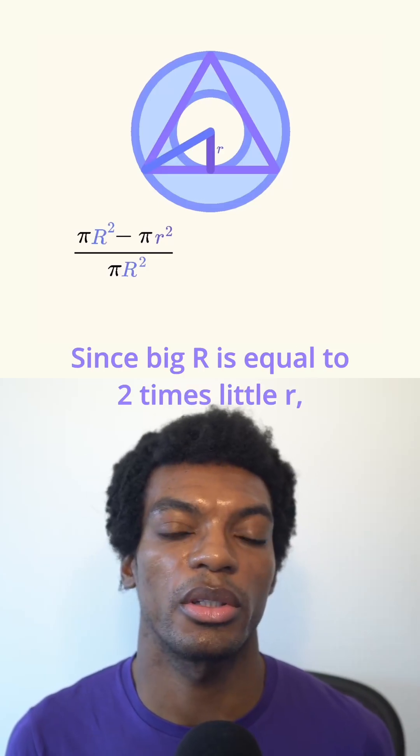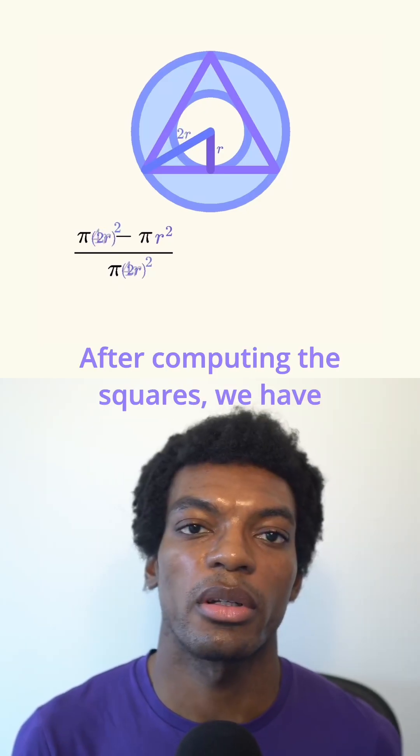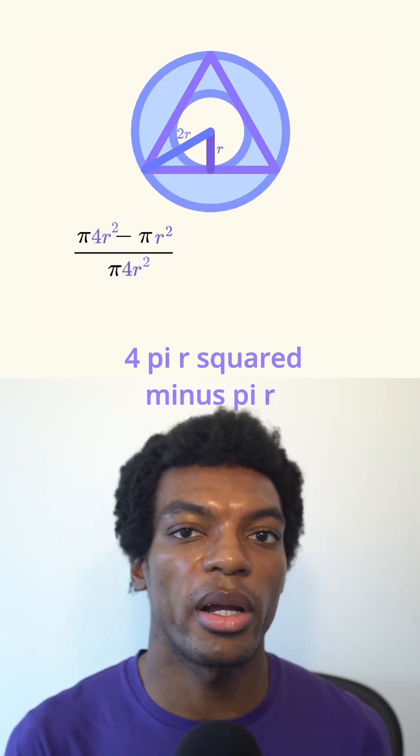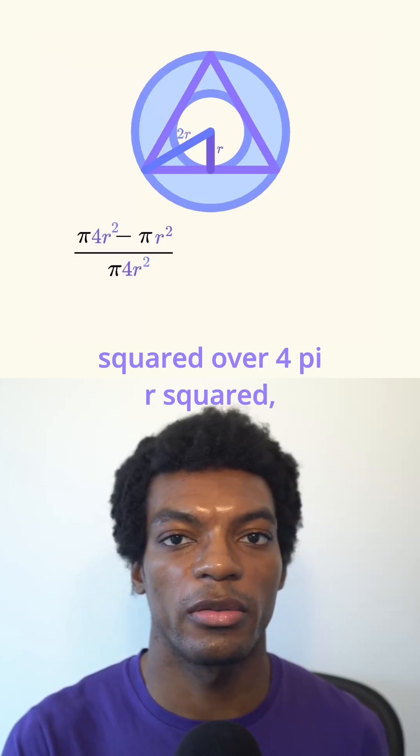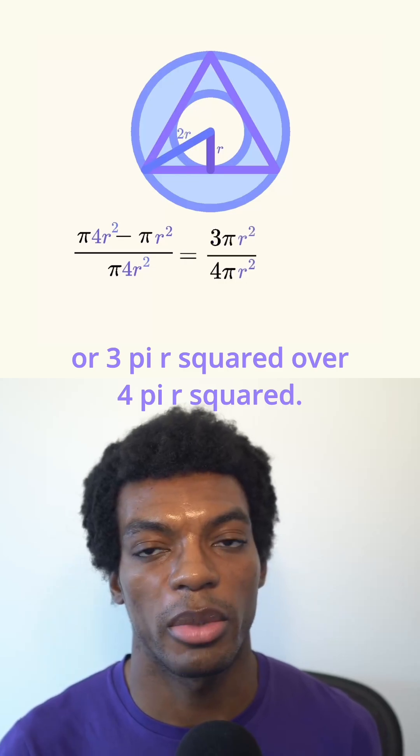Since big R is equal to 2 times little r, we'll substitute that in. After computing the squares, we have 4 pi r squared minus pi r squared over 4 pi r squared, or 3 pi r squared over 4 pi r squared.